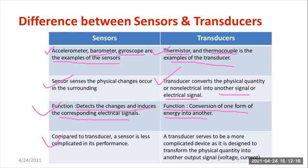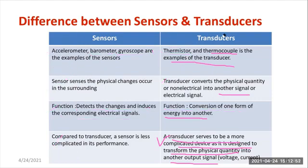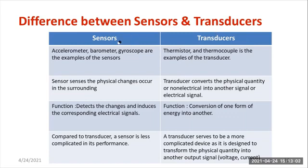Compared to a transducer, a sensor is much less complicated — its performance and working are simple. But a transducer is more complicated because it always comprises a sensing element as well as a signal conditioning device, and it is designed to transform physical quantity into another output signal, converting non-electrical quantities into electrical quantities. So it is more complicated and expensive, but the applications of transducers are wider compared to sensors, which have more limitations.